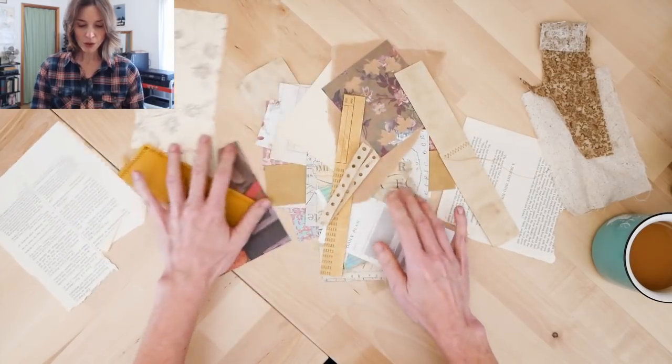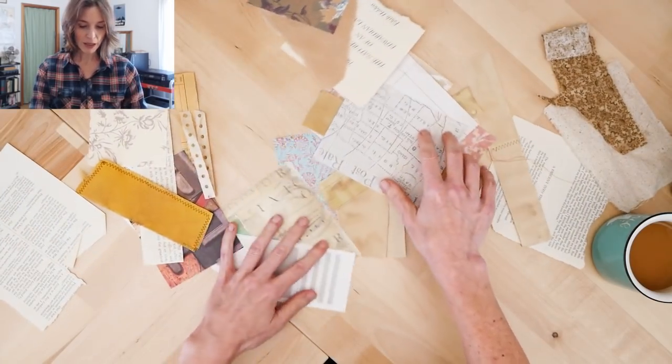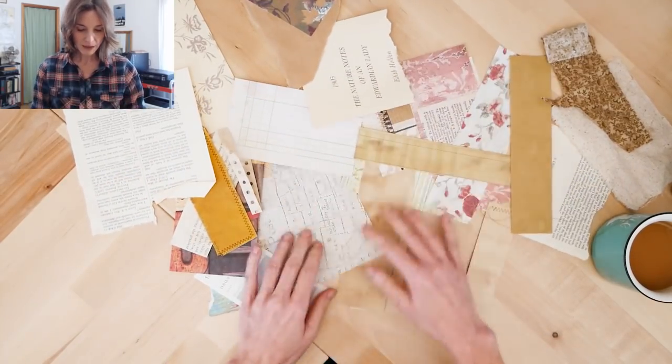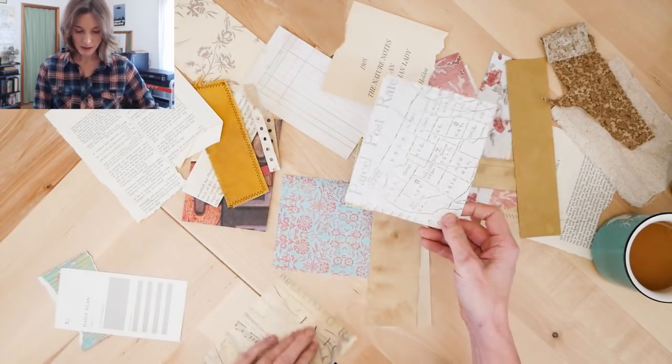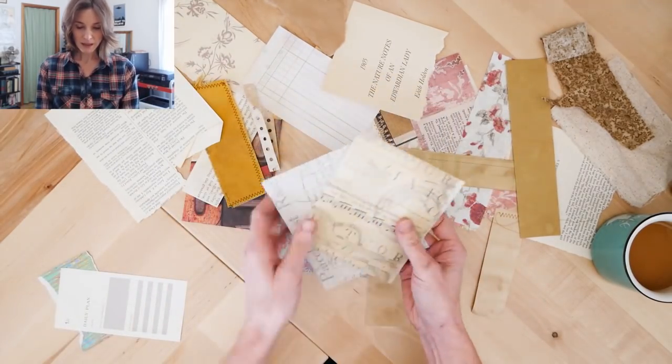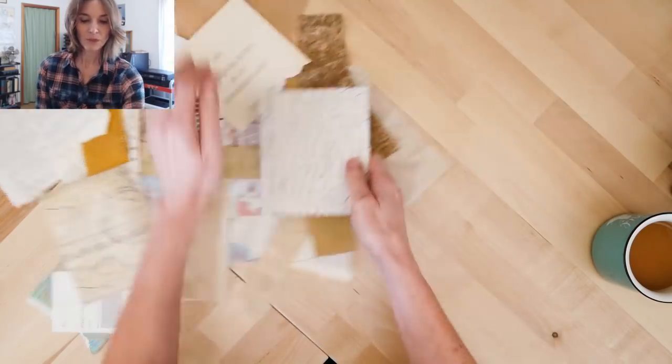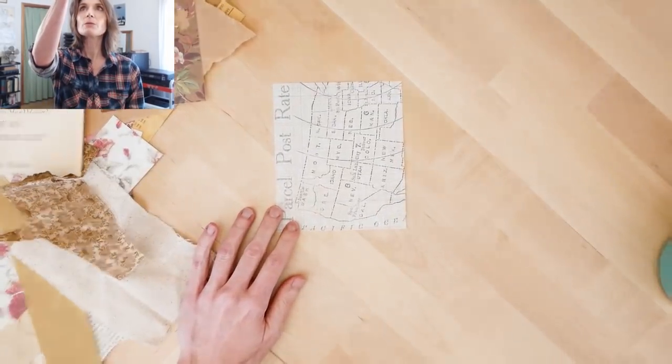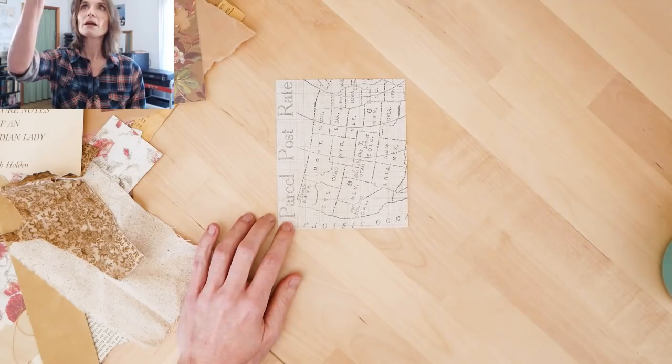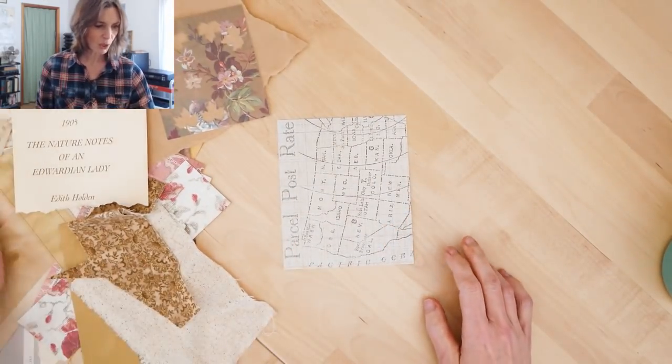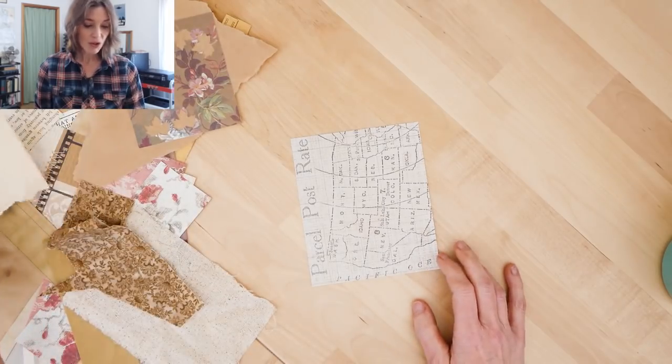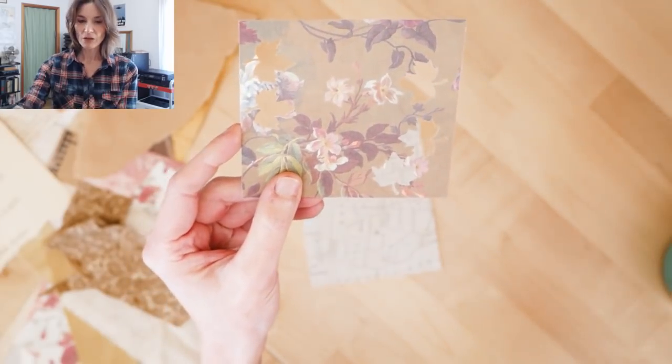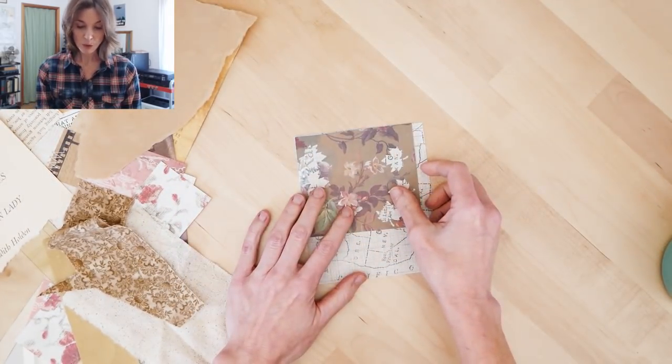What we're going to do is make what I call a scrap sampler. Find something that is probably the biggest piece. Start with the biggest piece, and then just start building on top of that. Take another piece. This piece even has little cutouts out of it. It doesn't matter. Just put that in there.